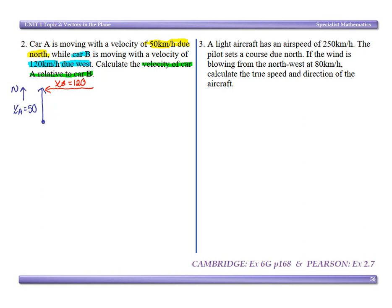So if we want to work out our resultant, you'll notice we have to change the direction of velocity B, so negative velocity B, so negative 120, and that will give our resultant.